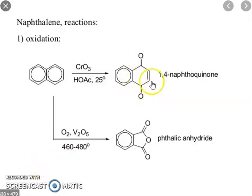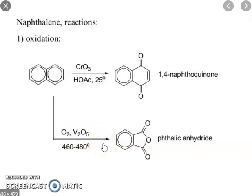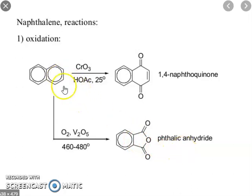You can see the structure and oxidation in the presence of vanadium pentoxide at 460 to 480 degrees Celsius. Naphthalene is converted to phthalic anhydride — one ring is destroyed here, as you can see.